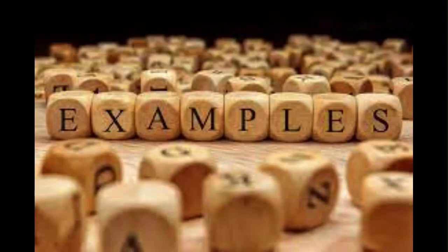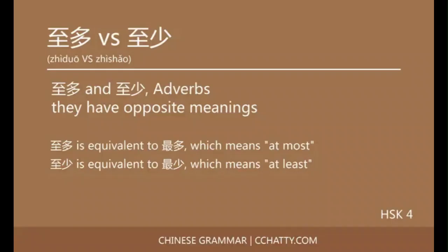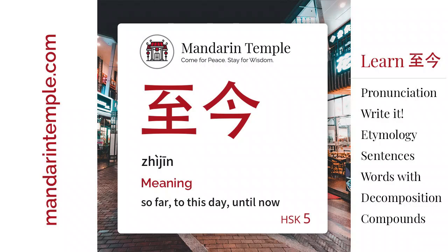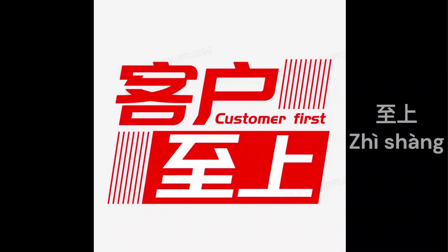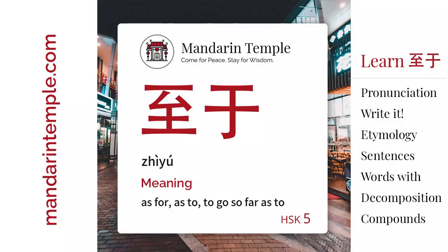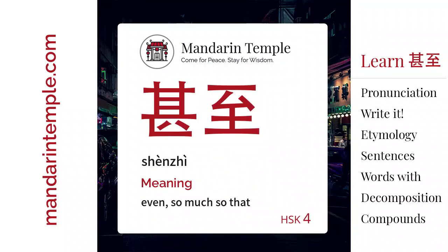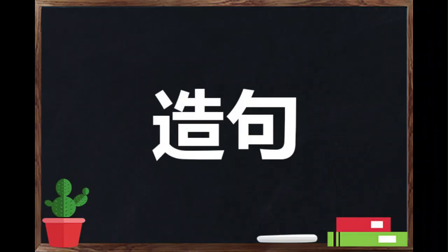Now let's see some examples. 至少 means 'at least'; 至今 means 'to this day' or 'up to now'; 至高 means 'supreme' or 'above all else'; 至于 means 'as for' or 'as to'; and 甚至 means 'so much so that.'